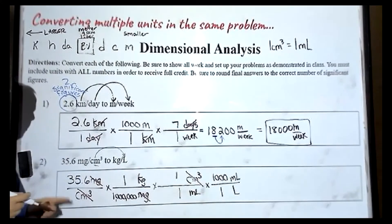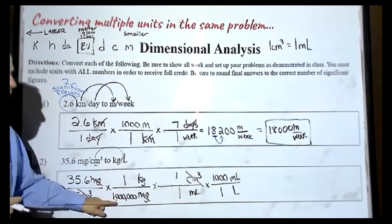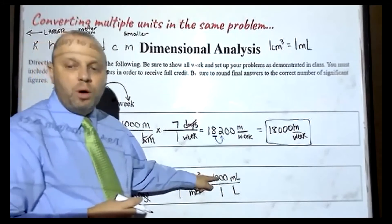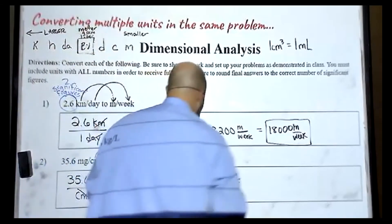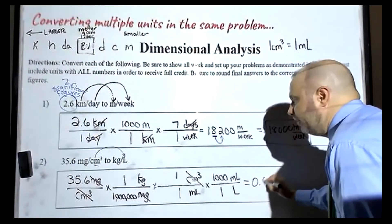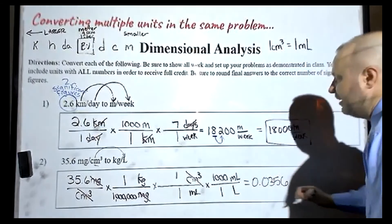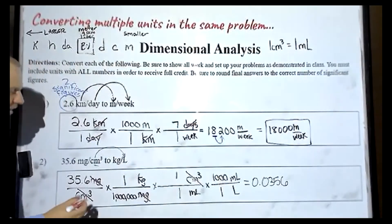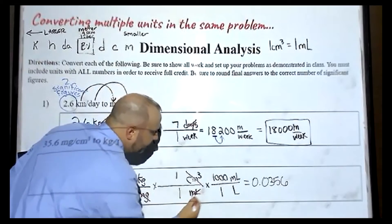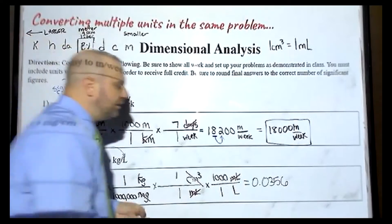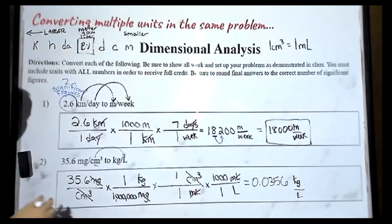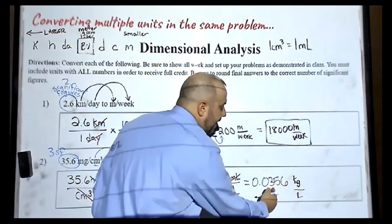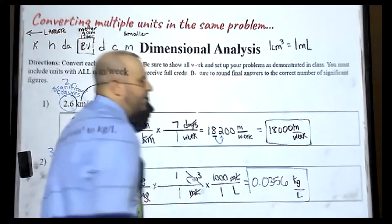Finally, I type this into my calculator: 35.6 divided by one million — divided by because it's on the bottom — times 1,000, times because it's on top. If a number is on the bottom, you divide by that number; if a number is on top, you multiply by that number. For this problem, we wind up getting 0.0356. We have kilograms — we keep that — milliliters here and milliliters here drop out, so I have kilograms per liter. We have three significant figures here, so our answer can have three significant figures: one, two, three. That is our final answer.